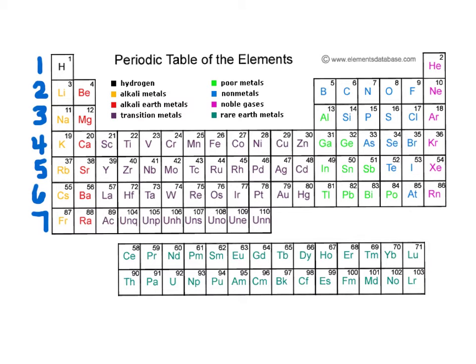Going up and down, we have our vertical columns, and again we call those groups or families. We will number our families 1, 2, 3, 4, 5, 6, 7, 8. Some periodic tables will number it all the way across including our middle elements. This is usually the way that I will represent our elements.